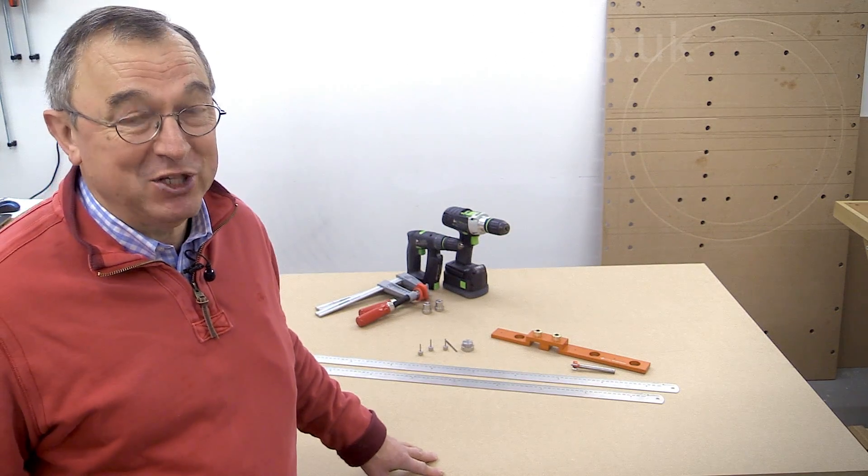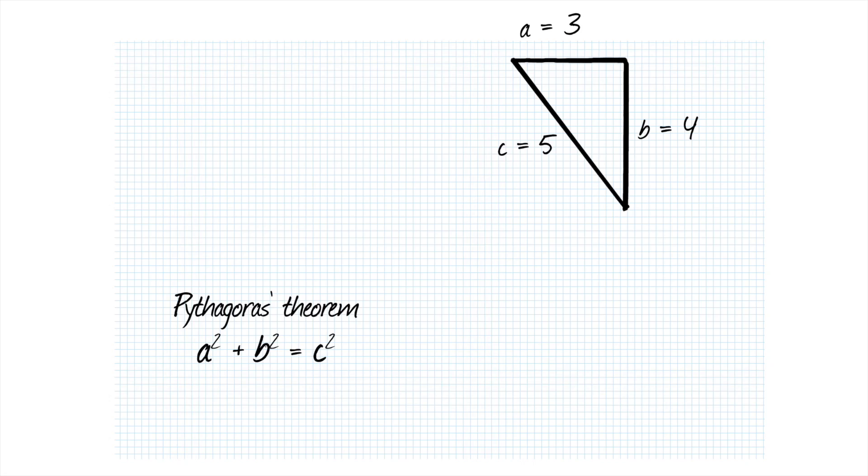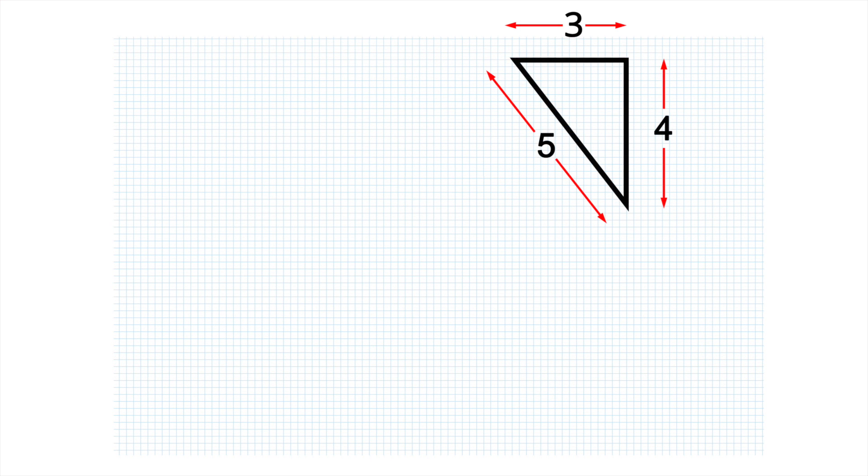But first of all I'm sorry about this but we've got to go back to school and do a tiny bit of geometry. I'm sure most people remember Pythagoras from school and the fact that the 3-4-5 triangle has a right angle in its top corner.